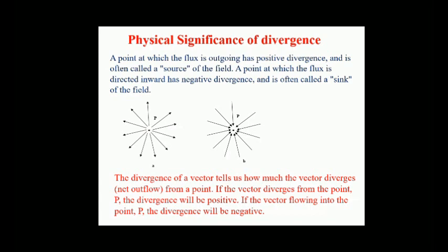The divergence of a vector field is often illustrated using the example of the velocity field of a gas. A moving gas has a velocity at each point which can be represented by a vector, so the velocity of the gas forms a vector field. If a gas is heated, it will expand, causing a net motion of gas particles outward in all directions.